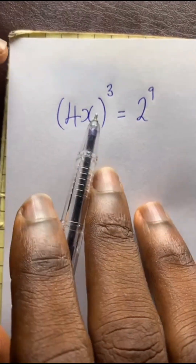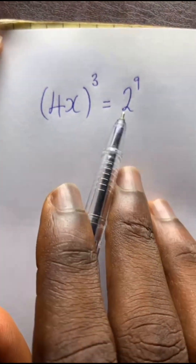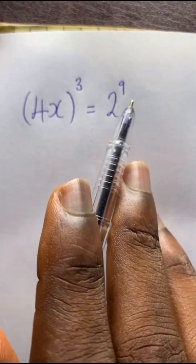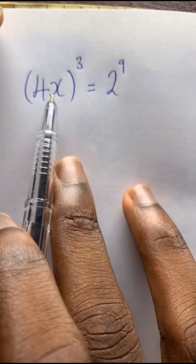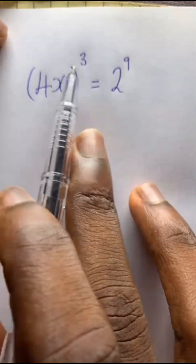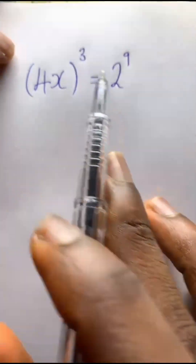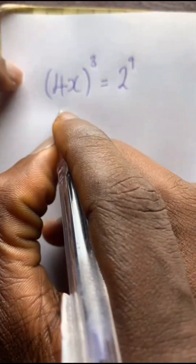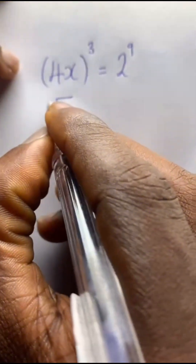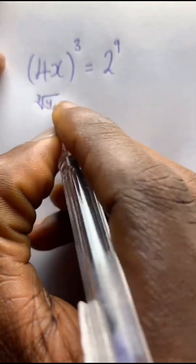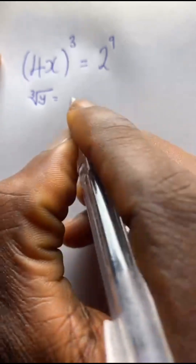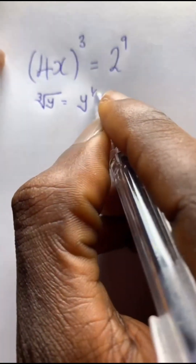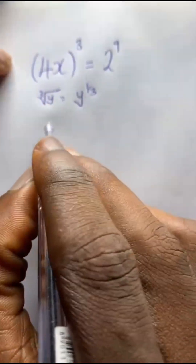We have 4x to the power of 3 equals 2 to the power of 9, and we're looking for x. When you have something like this, the cube root of y is the same as y to the power of 1 over 3. So we need to take the cube root on both sides.